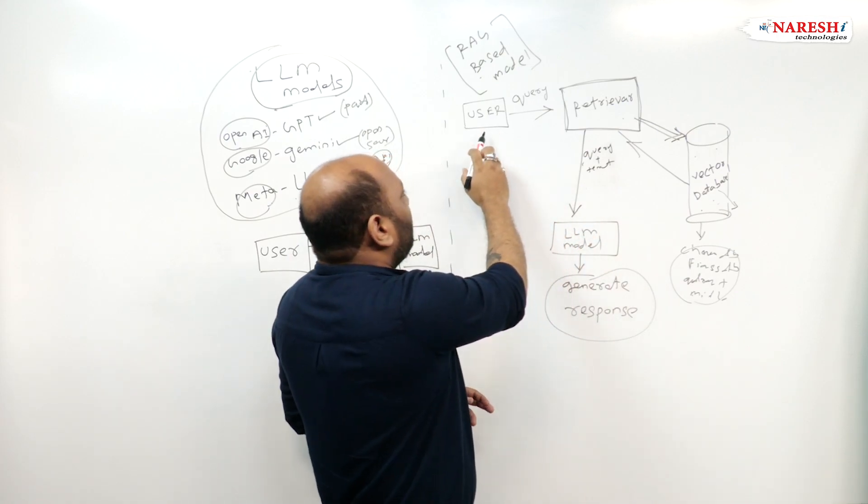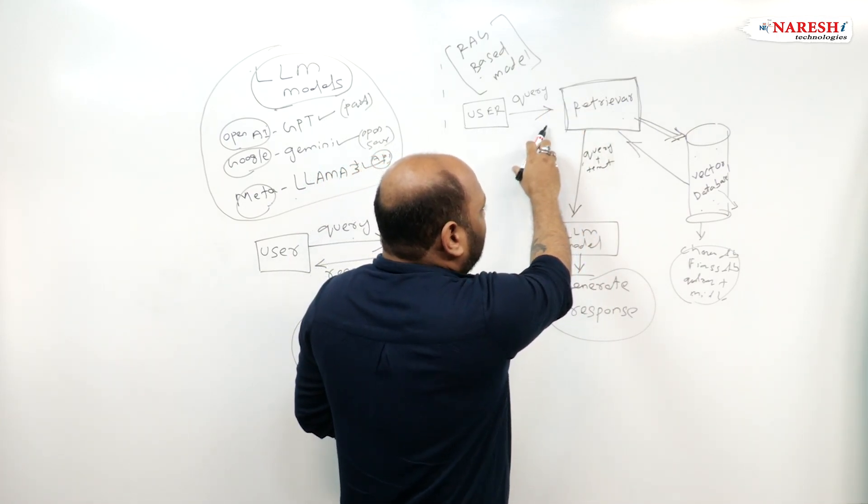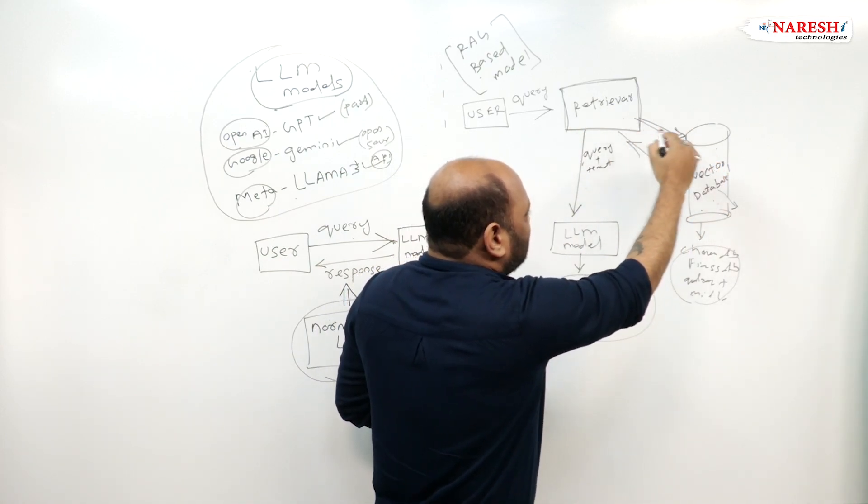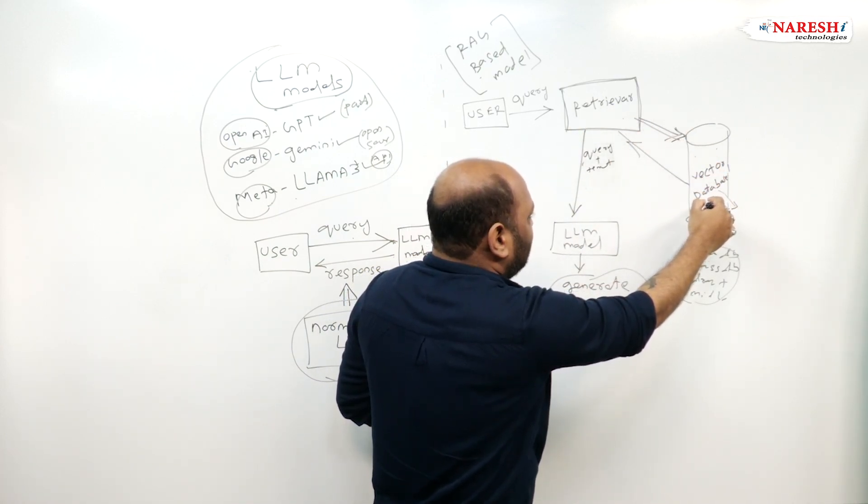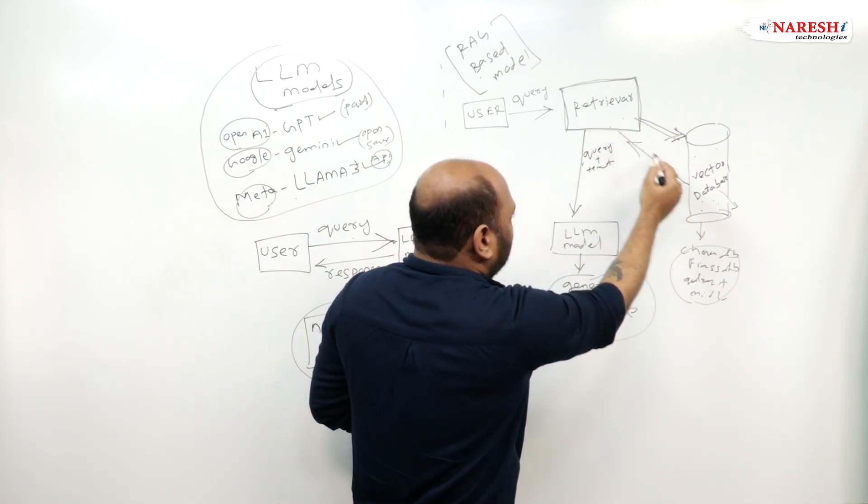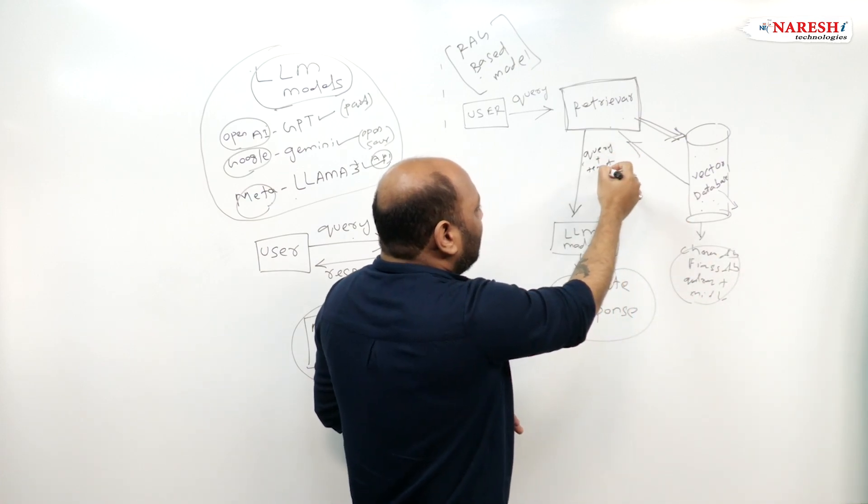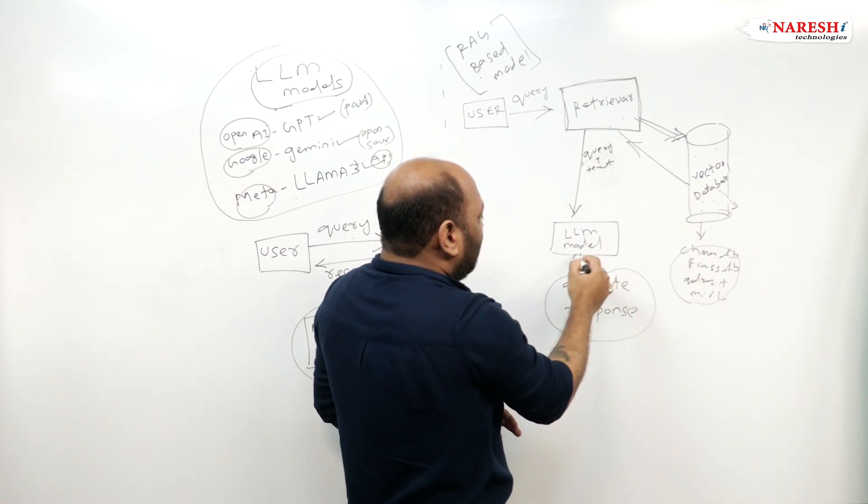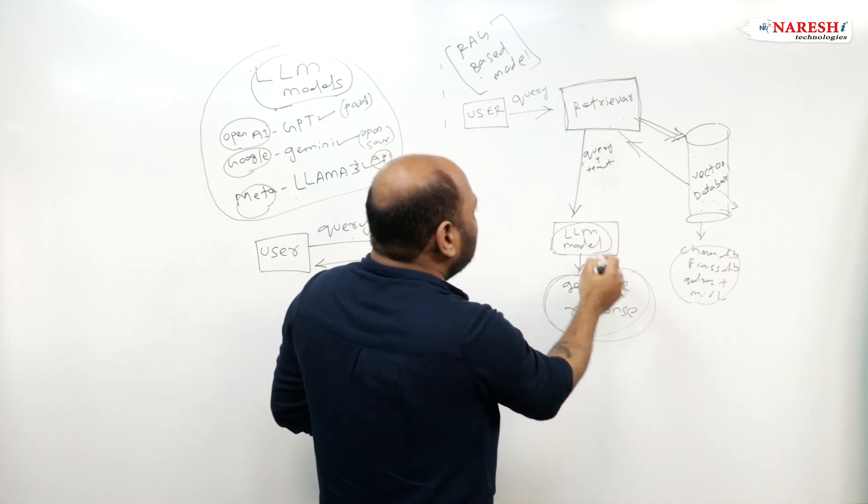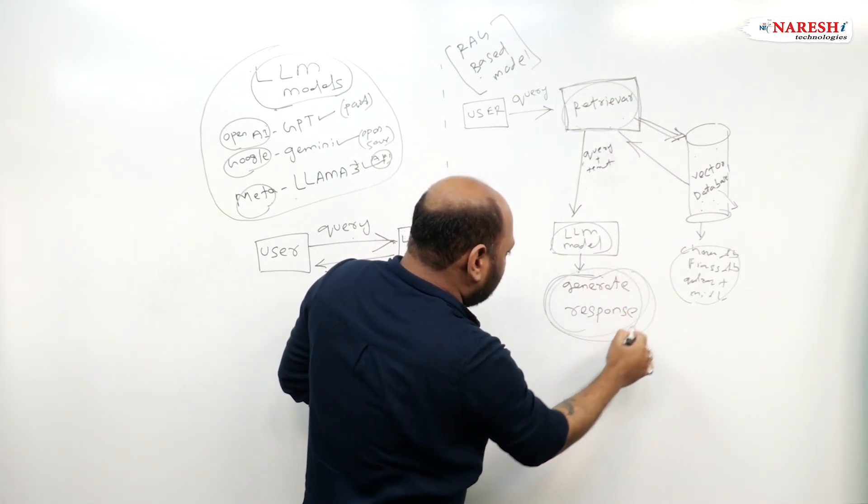Again, I'm telling you, when a user sends a query, it retrieves the text and stores the text in the form of vectors. The similarity vectors are stored in the vector database. From the vector database, it's passed to retrieval for the relevant similarity information. Then it generates a query and the LLM model generates responses. This concept is called Retrieval Augmented Generation.